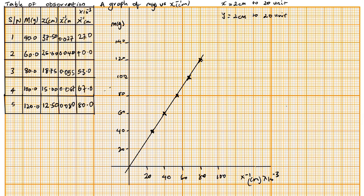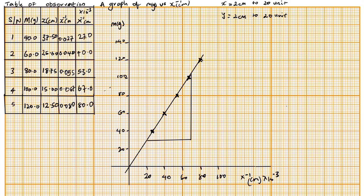The next thing to do is calculate our slope. Your slope triangle should cover at least one third of your graph — don't make your slope too small or too big. Now, the slope is going to be change in m, which is in grams,